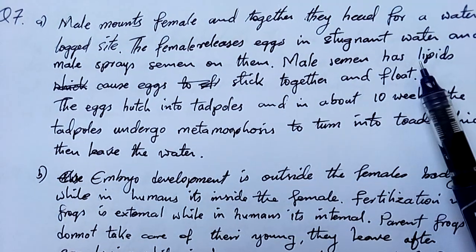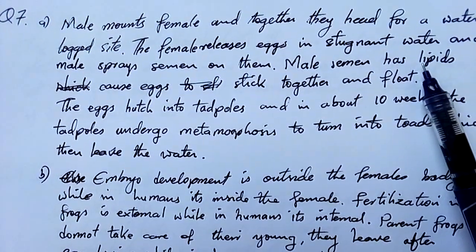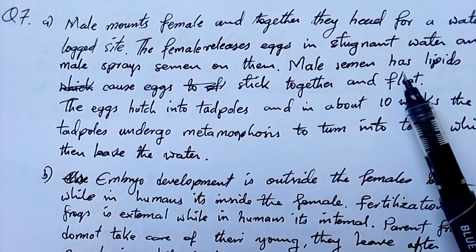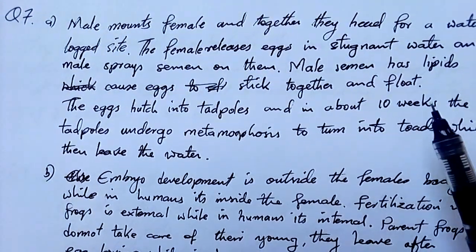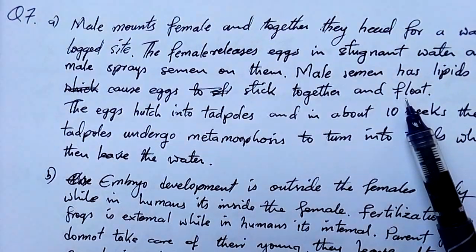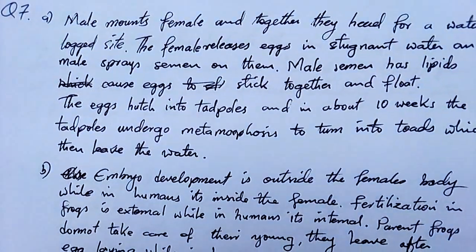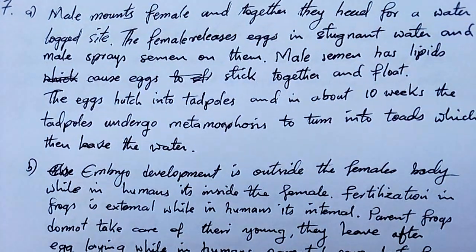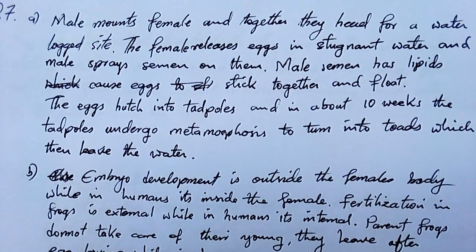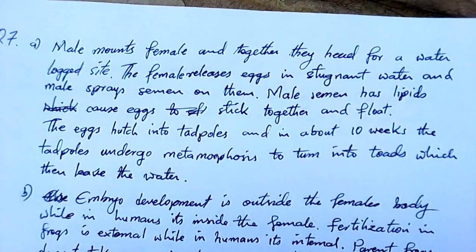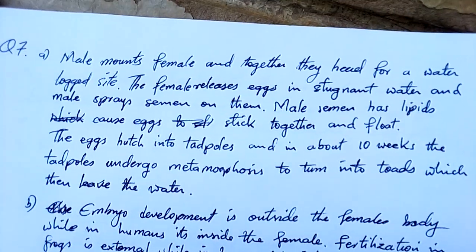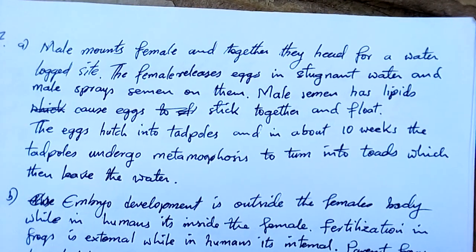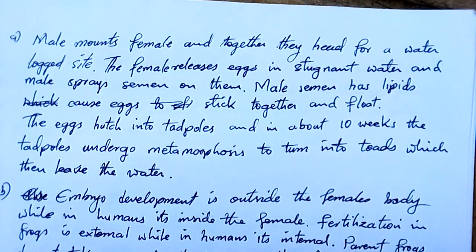Male semen has lipids which cause eggs to stick together and float. The floating is important to prevent the eggs from being eaten by fish and other frogs. The two have to lay eggs in stagnant water because if the water is flowing, the eggs won't stick together easily and may be carried away to far places and end up being eaten.